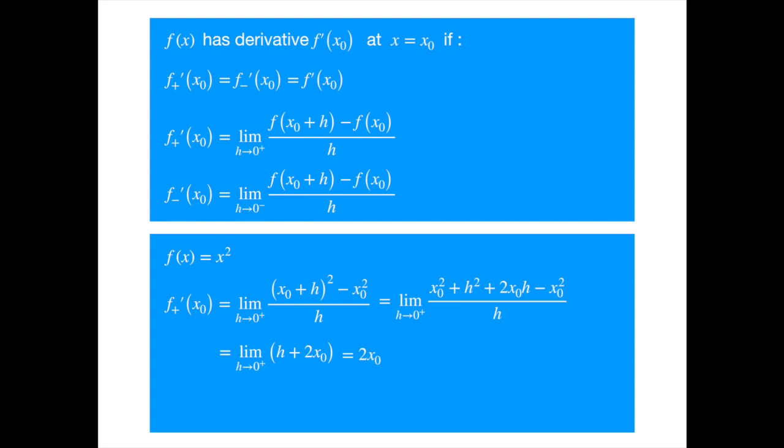We can repeat the procedure for the left limit, and we will get the same answer. As both limits exist and are equal, we say that the function is differentiable at x naught. That was easy.